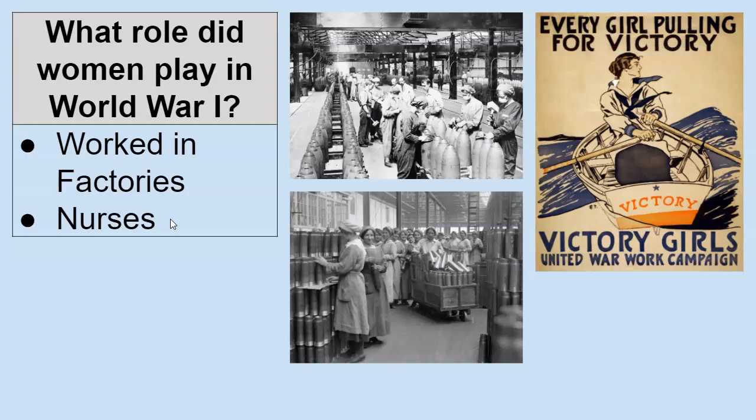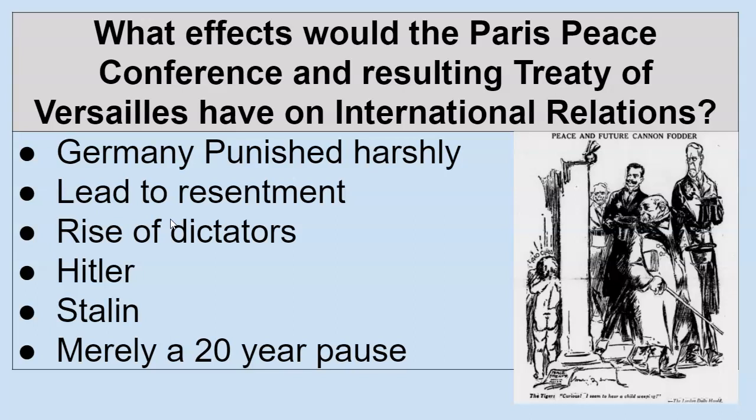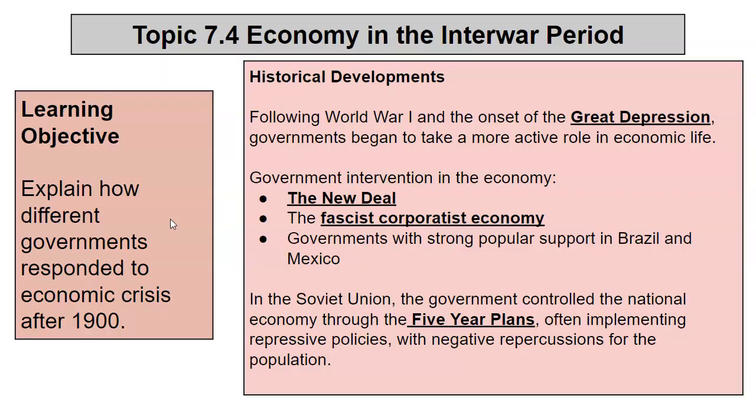Women play a huge role in World War I. They work in the factories, taking jobs to keep the machinery running and get weaponry to the front line. Many serve as nurses in field hospitals and when injured soldiers return home. The effects of the Paris Peace Conference and the Treaty of Versailles are really all about the harsh punishment of Germany and the fallout from that, leading to the rise of Hitler. This peace treaty really only creates a 20-year pause in the wars.